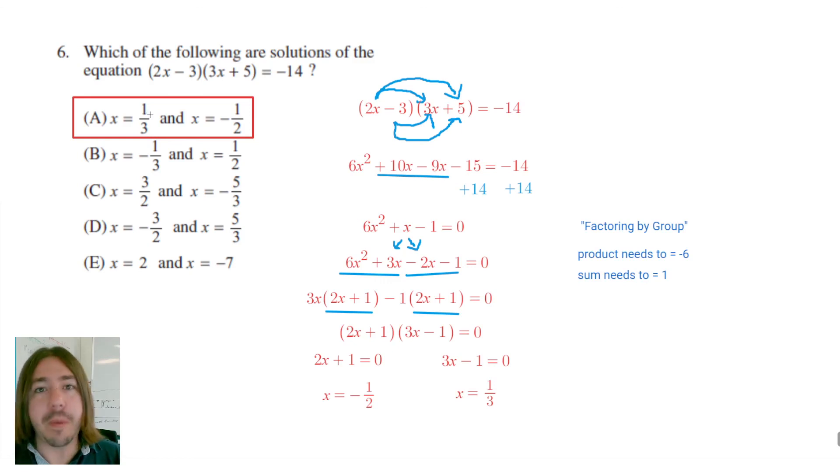You can also just use the answer choices to your advantage. There's no penalty on the CLEP for getting a wrong answer. So it's sort of in your interest to try that, if you don't know how to do it, and see if you can get it that way. But that's it for number six. Thanks for watching, and you all have a great day.